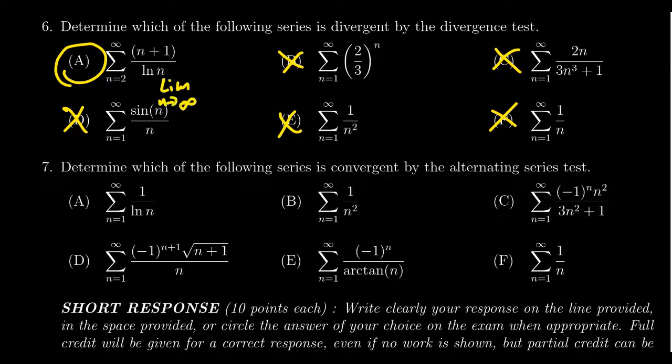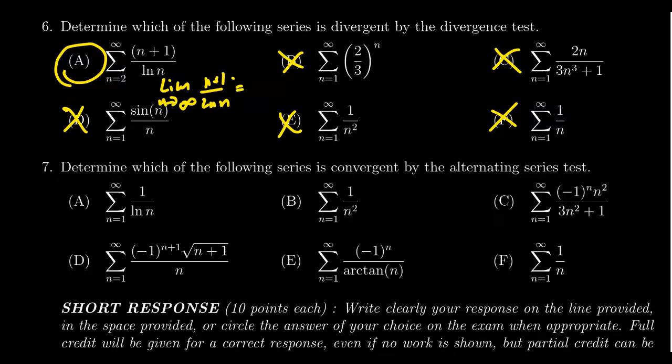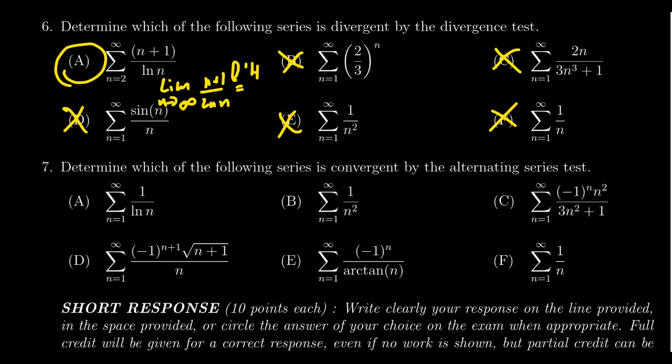The limit as n goes to infinity of n plus 1 over the natural log of n. This currently has an indeterminate form, infinity over infinity. So we'll apply L'Hopital's rule here to see what's going on. In the top, you're going to get back a 1. In the denominator, you're going to get 1 over n, as n goes to infinity.